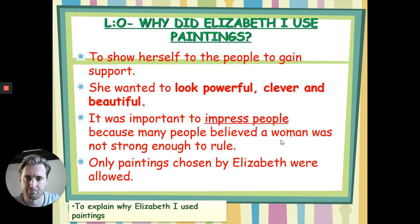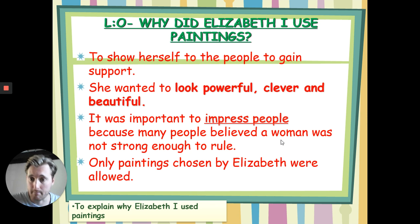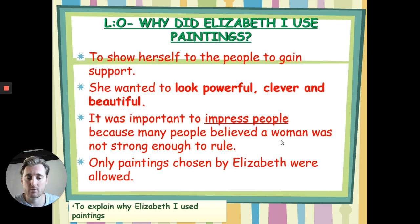Now, think about that. What could be a problem if the only paintings chosen by Elizabeth were allowed? Bringing back to that word we've just used previously, it might be propaganda. Elizabeth chose pictures that influenced her image, but therefore they're not always maybe reliable. And that's why we need to assess them in more detail.